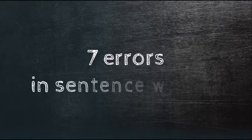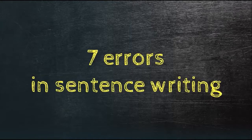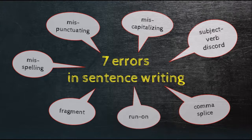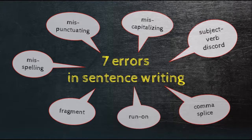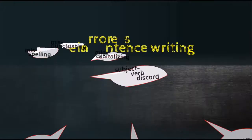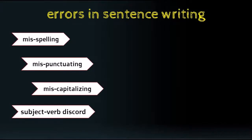Hello everyone. In this video I'm going to talk about the errors in writing. My focus will be on the seven most common errors in academic writing. The errors are: misspelling, mispunctuating, miscapitalizing, subject-verb discord, fragment, run-on, and comma splice. By knowing these, hopefully you can recognize the errors you usually make and thus prevent yourself from doing them again in the future. In this video I'll elaborate on the definition, characteristics, and solutions with clear examples.